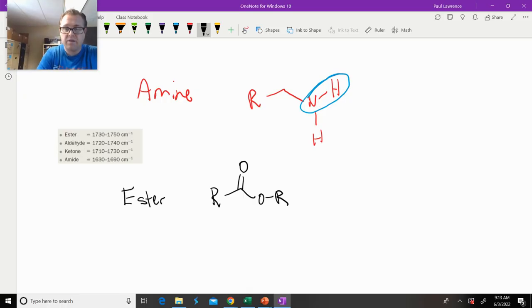Now, an ester, this R group has to be alkyl. Because if it was, if that R group all of a sudden became a hydrogen, what do we have? We have a carboxylic acid. Okay, so that R group has to be an alkyl group. And if it is, then we have an ester.